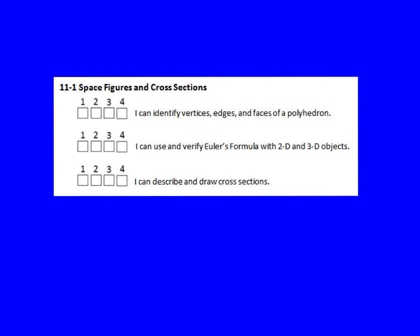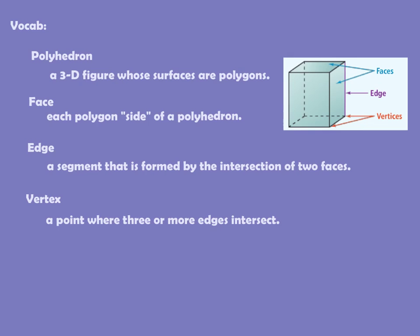Alright, so let's get started and check out this vocab. A polyhedron is a space figure — a three-dimensional figure whose surfaces are polygons. Each polygon is considered a face of the polyhedron, which is really just the sides.